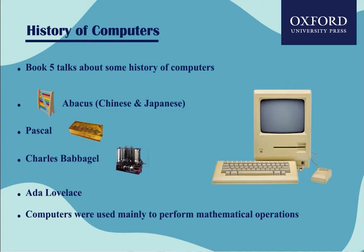Charles Babbage invented the Difference Engine, and only a few years ago we managed to recreate his creation from his patent — which actually had deliberate errors to make it harder to reproduce. Then there's Ada Lovelace, Countess Lovelace, who worked on Babbage's analytical engine and is known as the first person to create an algorithm. Some would argue she is the reason computers today use algorithms. Computers were mainly used to perform mathematics.